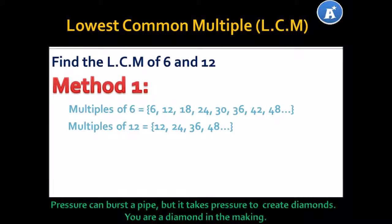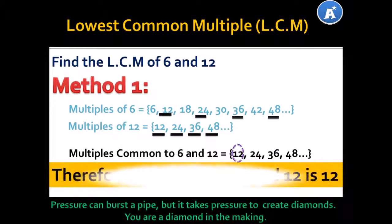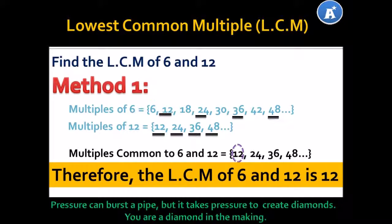Now, the key word here is common multiple. So, what are the common multiples between 6 and 12? They are 12, 24, 36, 48 and so on — meaning we can have more multiples in common. Now, let's look at the lowest common multiple. Which multiple is the lowest number common between 6 and 12? If you said 12, you are correct. Yes, 12 is our lowest common multiple. Therefore, the LCM of 6 and 12 is 12.